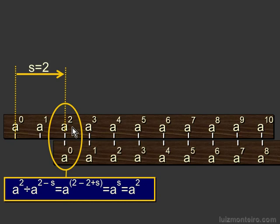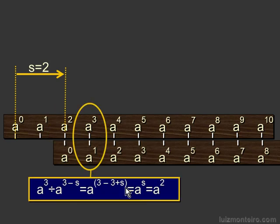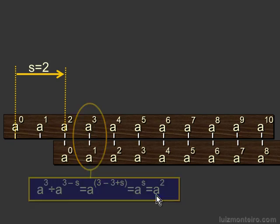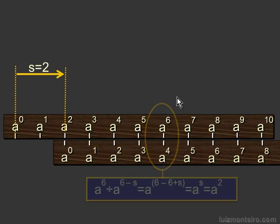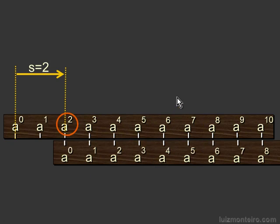So let's look here at a to the 2nd power over a to the 0 power. It's going to look something like this. The answer is a to the 2nd power. And if we move along the scale, a to the 3rd power divided by a to the 1st power is a to the 2nd power. So the answer is the same throughout the ruler.